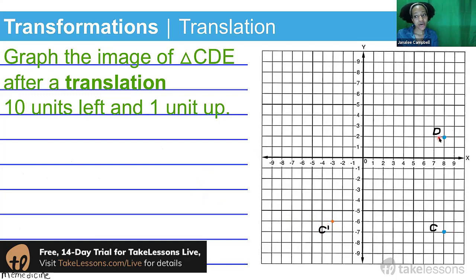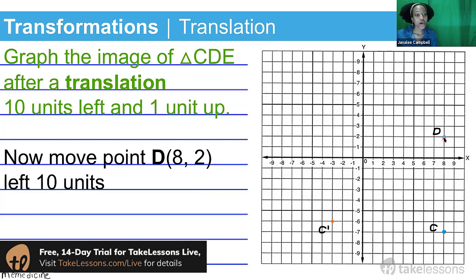So now we have point D, and we're going to move point D, which is currently located at an x-coordinate of 8 and a y-coordinate of 2. Obviously, we're going to move it left 10 units and we're going to move it up one unit. Oh, I was right this time.